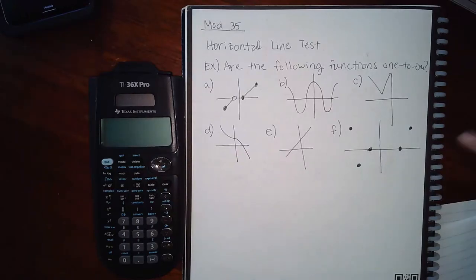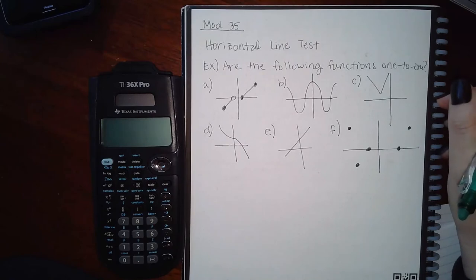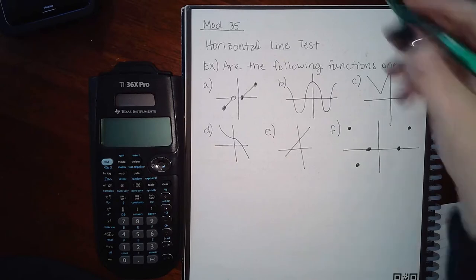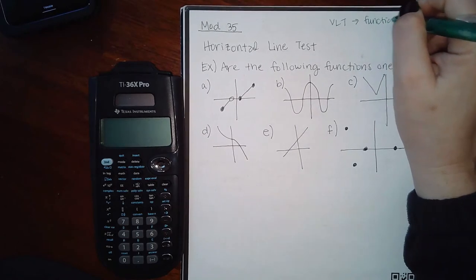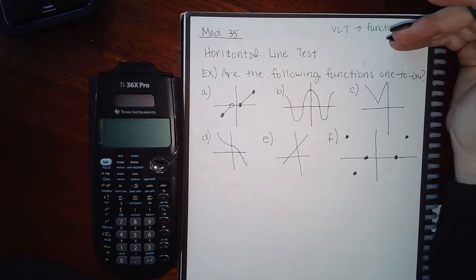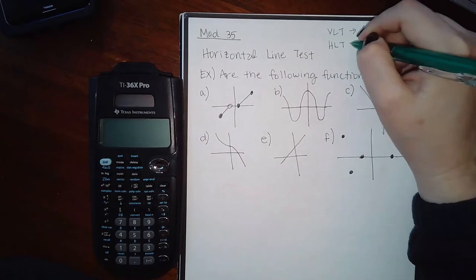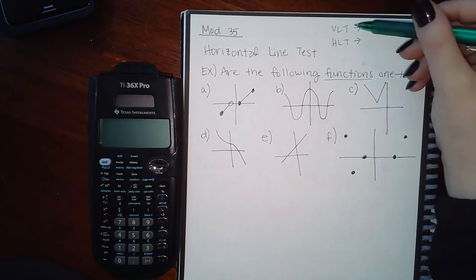This video covers module 35. The first topic is the horizontal line test, which is used to determine if a function is one-to-one. The vertical line test determines whether something is a function. If it passed the vertical line test it was a function; if not, it was just the graph of a relation. When doing the horizontal line test, you assume they are already functions. If it doesn't specify, you must do the vertical line test first.